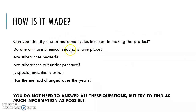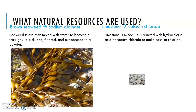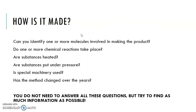There was a chemical reaction — reacting limestone with hydrochloric acid to make calcium chloride. The substance was heated since it had to be evaporated. The seaweed had to be turned into a powder, requiring grinding under pressure and special machinery. Chemical reactions probably require specialized materials, and these processes change over the years as we get better at making things — especially nowadays when we try to be energy efficient, using less energy and producing less waste.